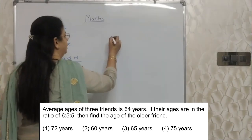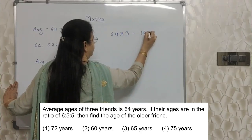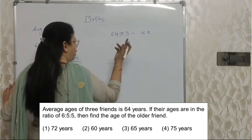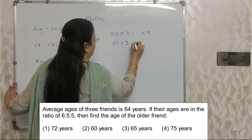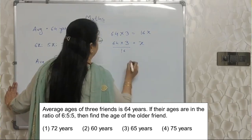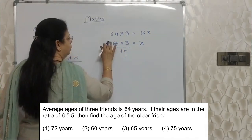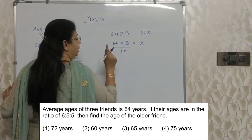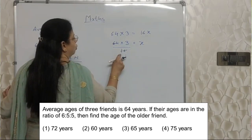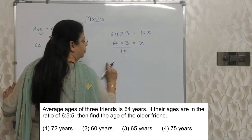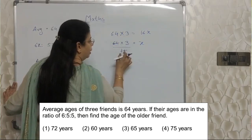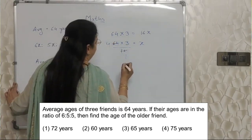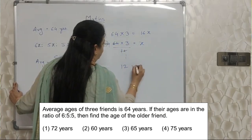Take the 3 to the other side: 64 into 3 equals 16x. No need to multiply this — don't waste time. Leave 64 into 3 as it is. Bring 16 down and leave x alone. Now for division: 16 fours are 64, so 4 into 3 gives x equals 12.